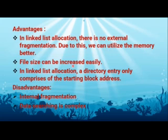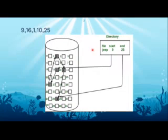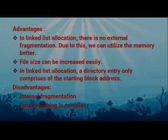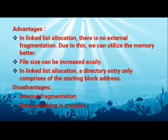The disadvantages are internal fragmentation and that data searching is complex. For example, if a file has 1,500 words and you want to search for word number 1,400, it takes a long time to retrieve that data. So data searching is complex, especially for lengthy files. These are the key points about the linked list allocation method.